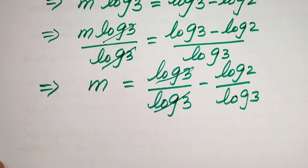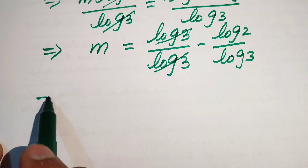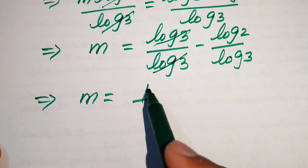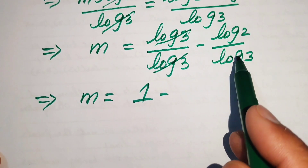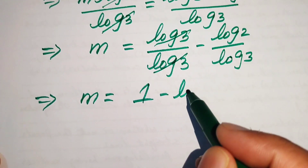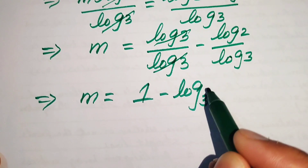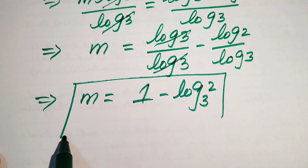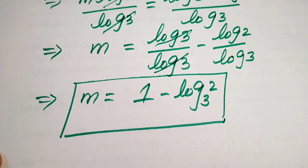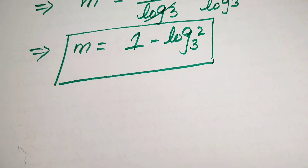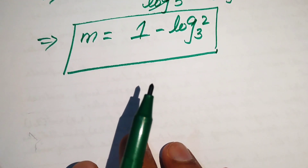The log 3 cancels on the left, and we break the right-hand fraction: log 3 divided by log 3 minus log 2 divided by log 3. The first term simplifies to 1, and log 2 over log 3 equals log base 3 of 2. So the value of m is 1 minus log base 3 of 2. This is the final answer, and we now verify this value.